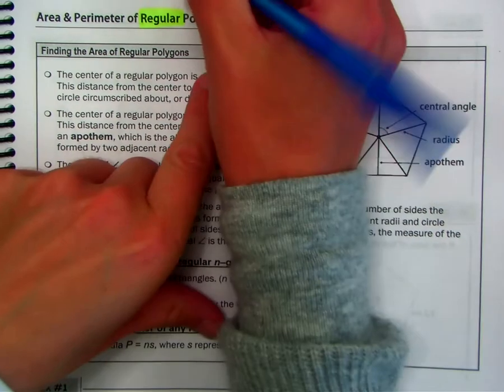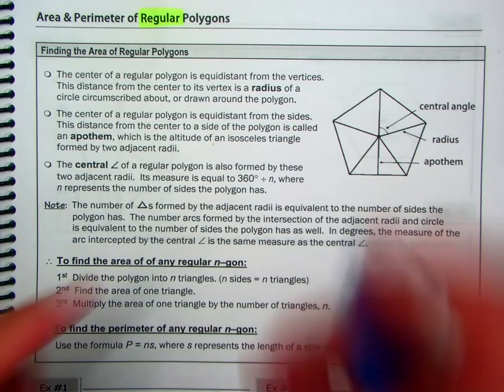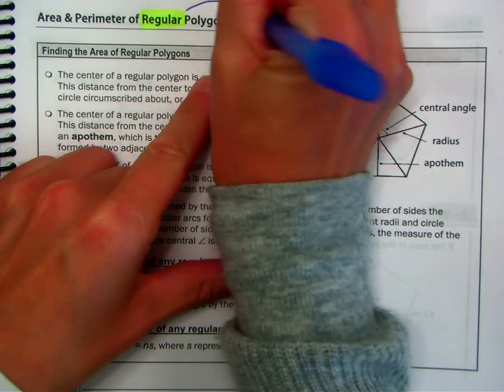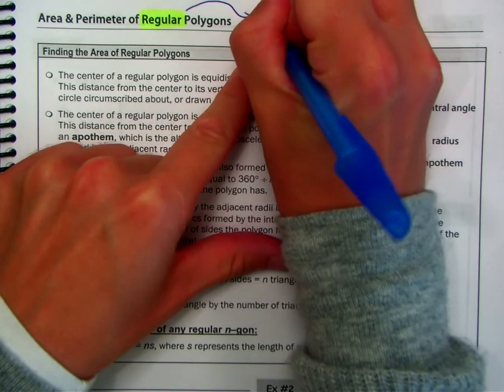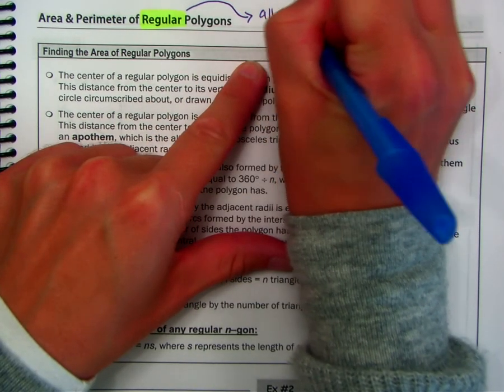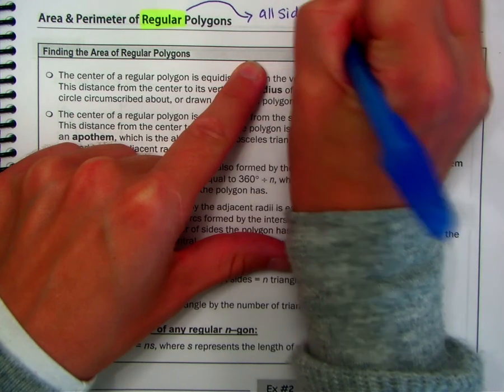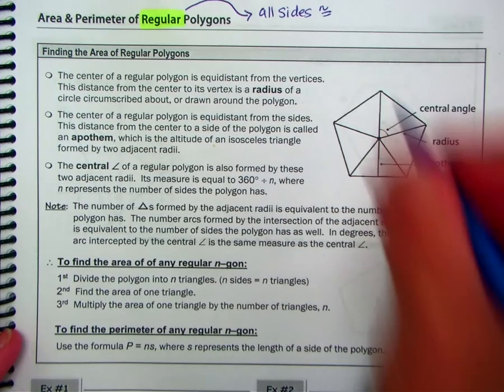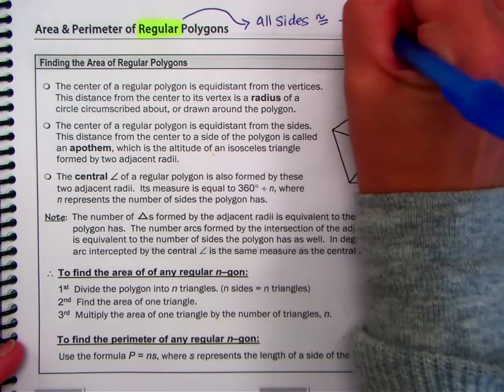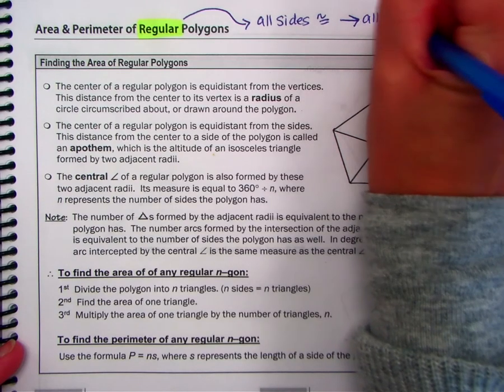So in any regular polygon, if you need to write it down for review, we have all sides congruent. Therefore, all angles are congruent.